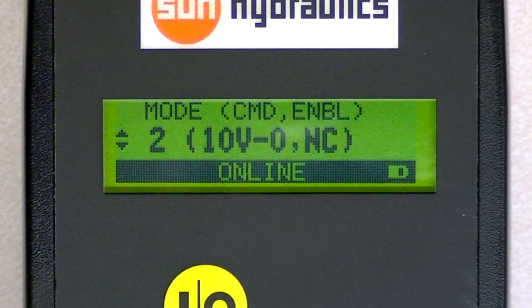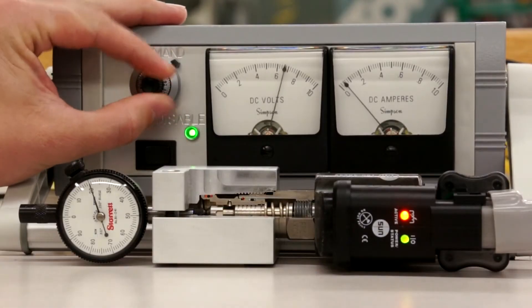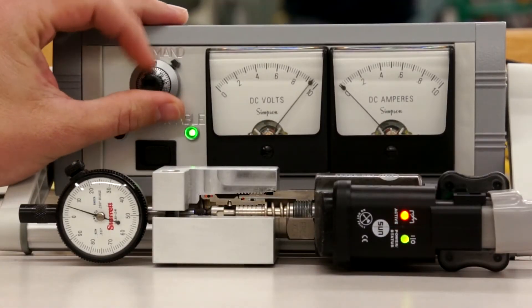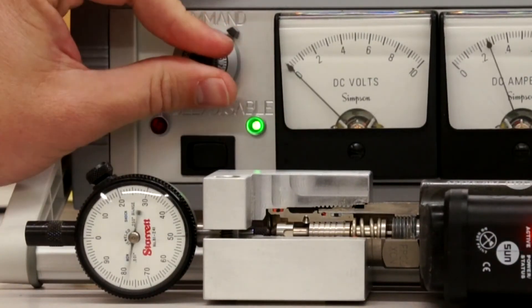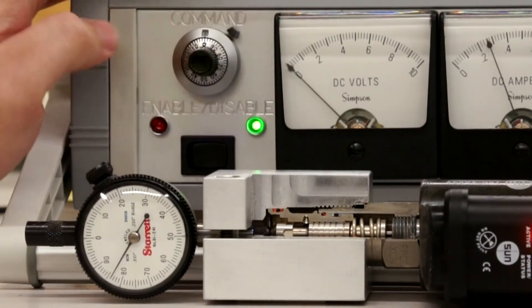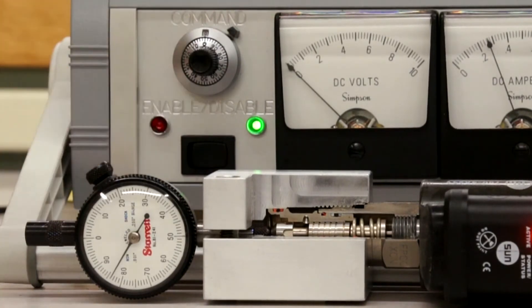Mode 2 is the inverse of mode 1, so now 0 volts will give you full current output. So now as you increase the voltage from 0 to 10 volts, the valve will close. 10 volts gives you the minimum output current and 0 volts gives you the maximum output current. Again, the enable is not connected.